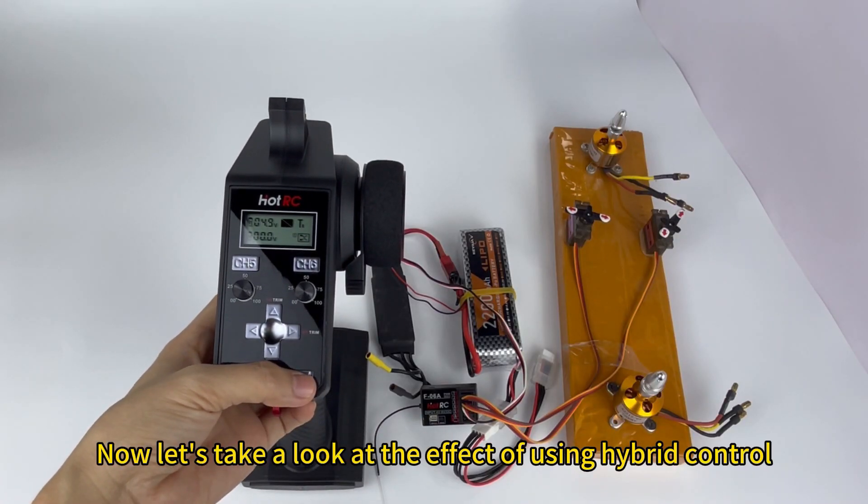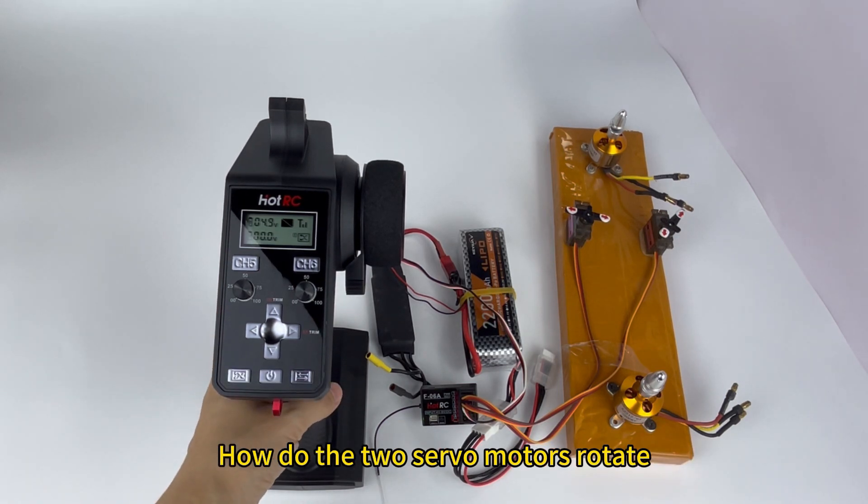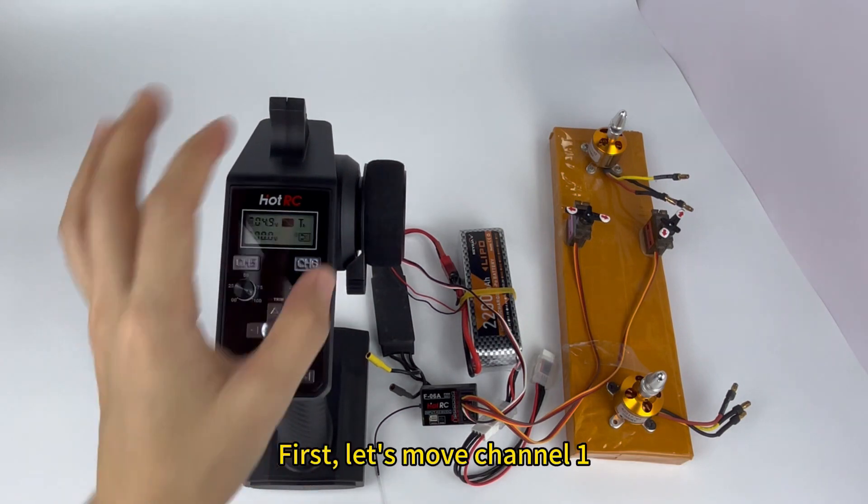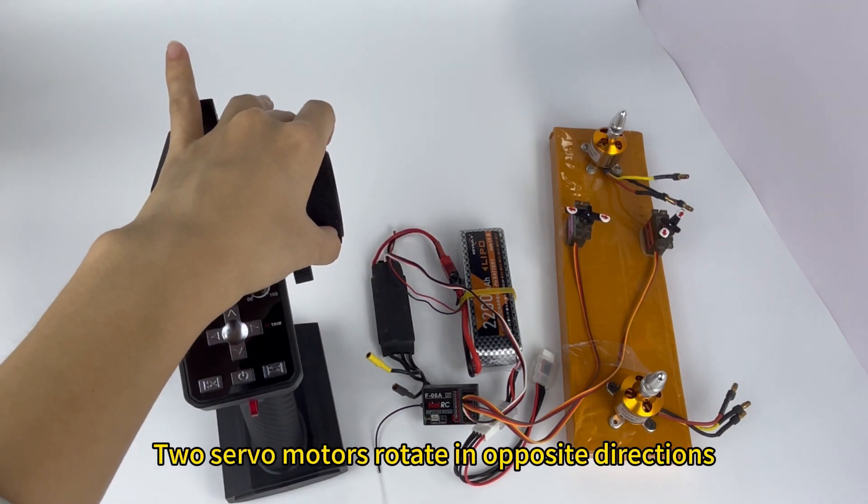Now let's take a look at the effect of using hybrid control. How do the two servo motors rotate? First, let's move channel 1. The two servo motors rotate in opposite directions.